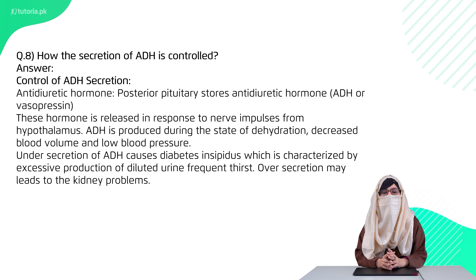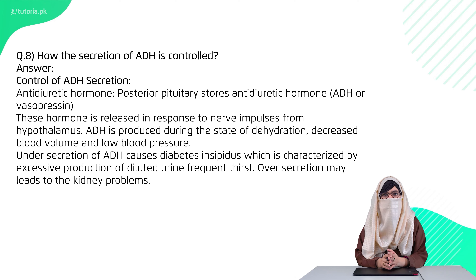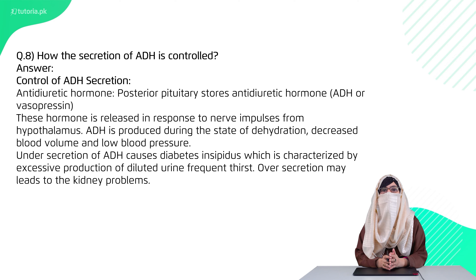Question eight: how is the secretion of ADH controlled? ADH, or anti-diuretic hormone, is produced by the hypothalamus and stored in the posterior pituitary gland. Its secretion is controlled by nerve impulses from the hypothalamus. ADH functions to maintain water retention, so the hypothalamus directly controls its release.